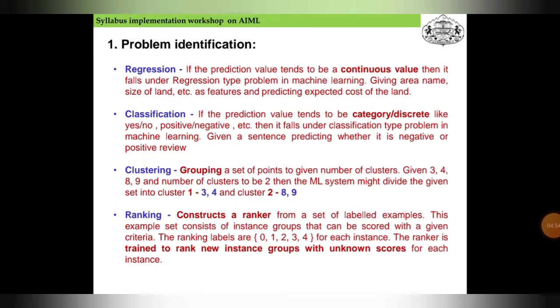Now, problem identification. First is regression. If the prediction value tends to be a continuous value, then it falls under regression type problems in machine learning. For example, giving area, name, size of land as features and predicting the expected cost of the land.